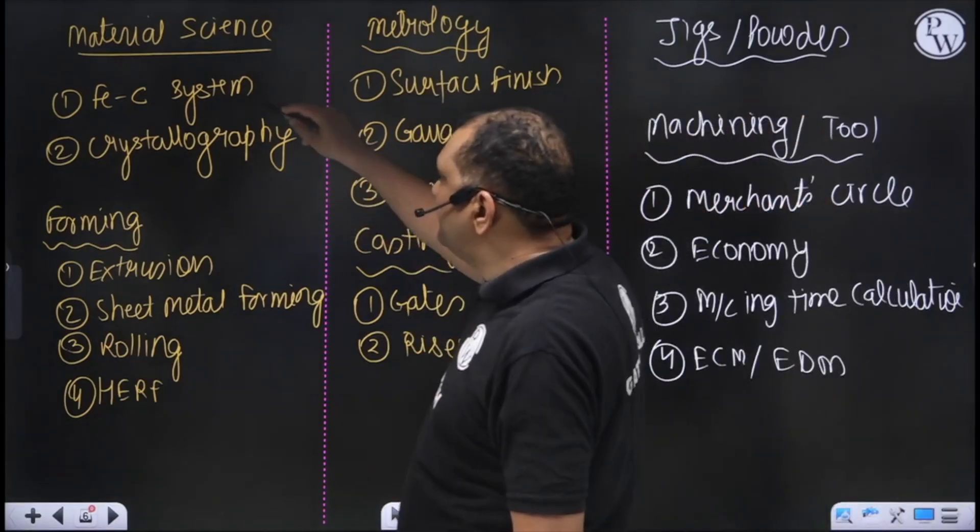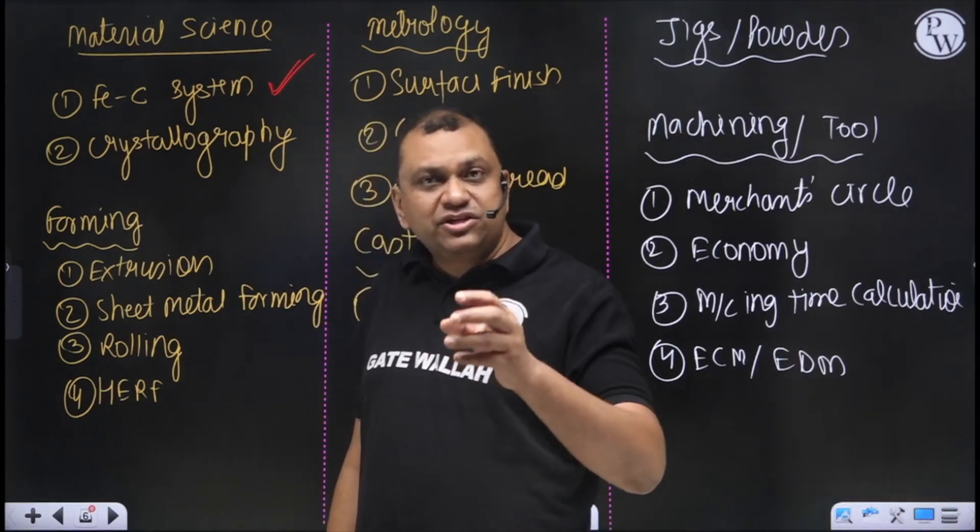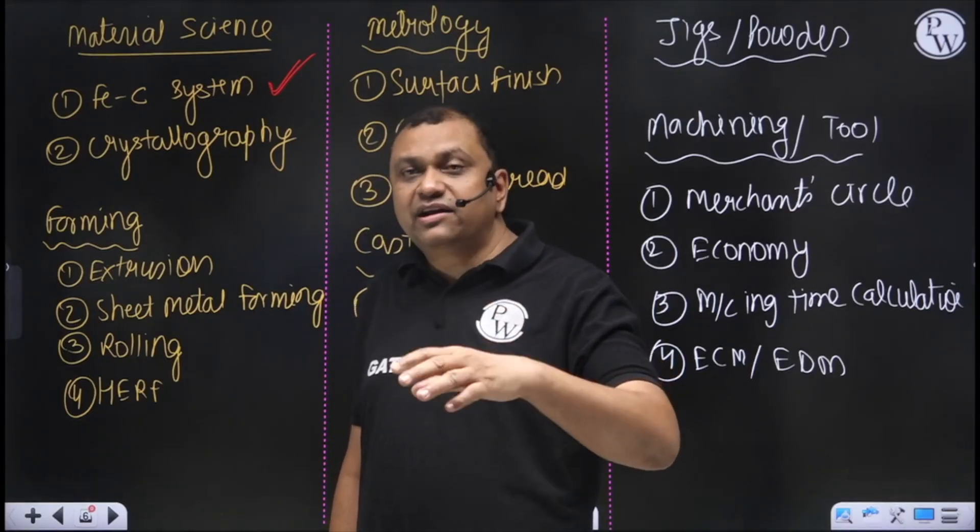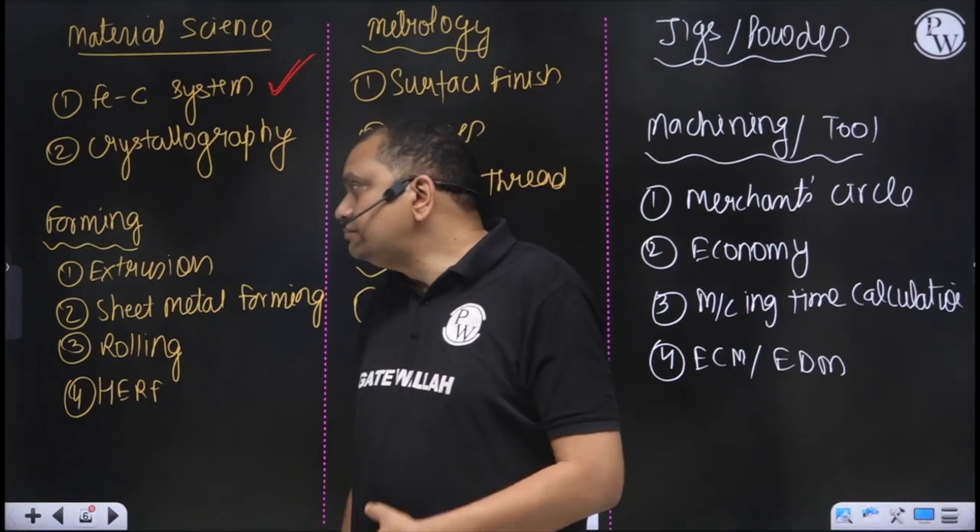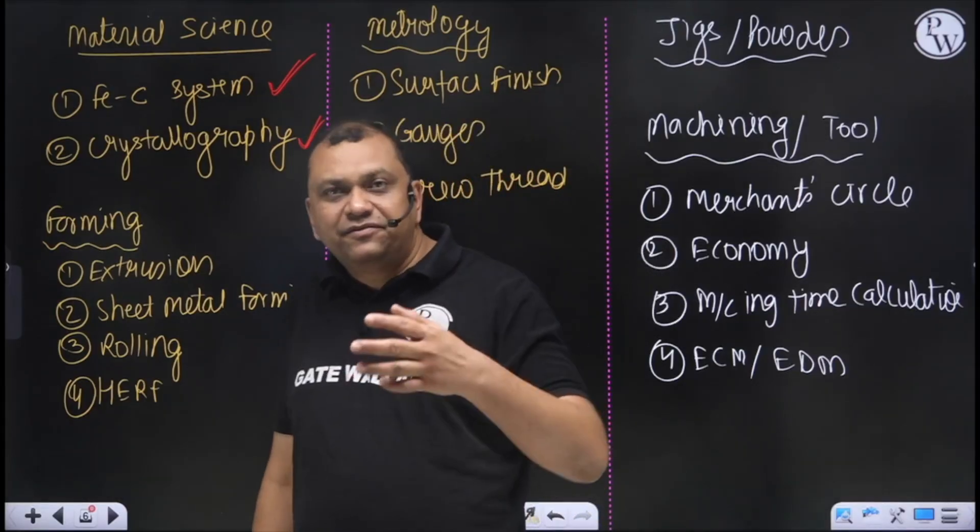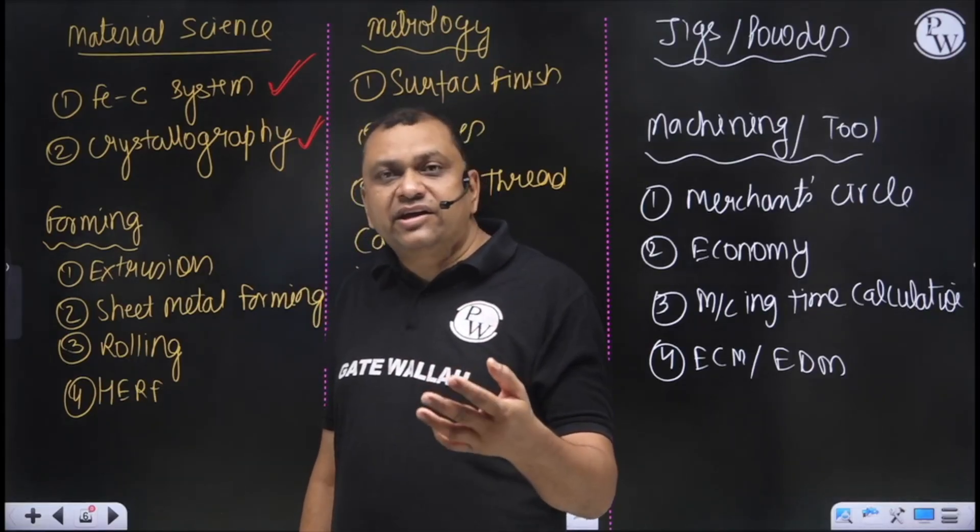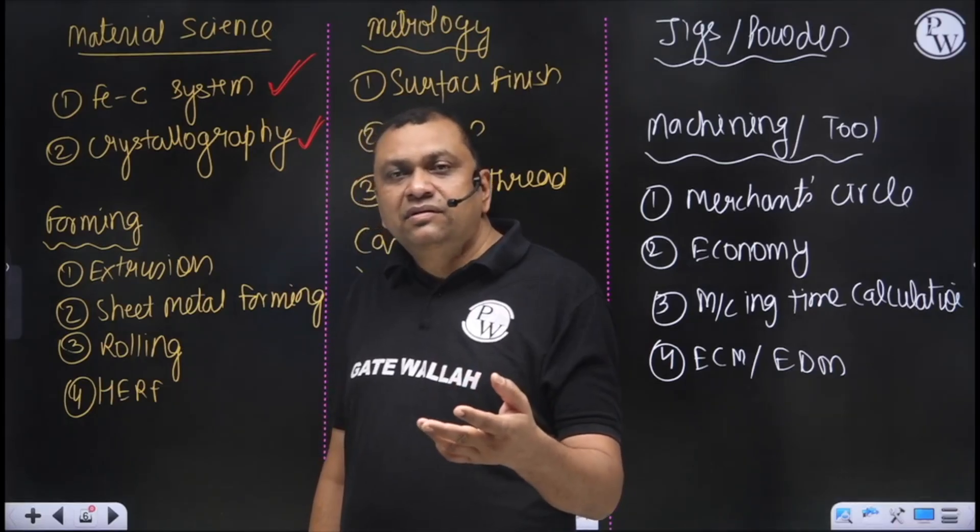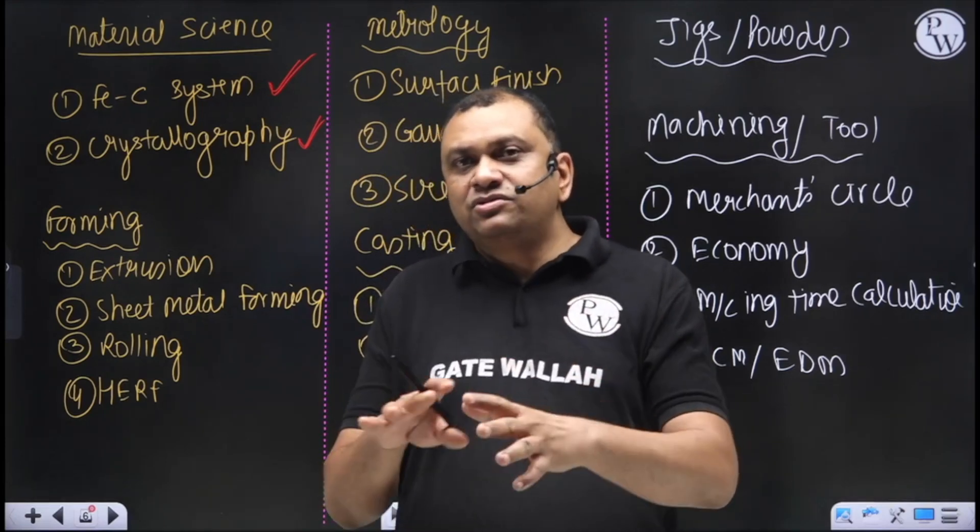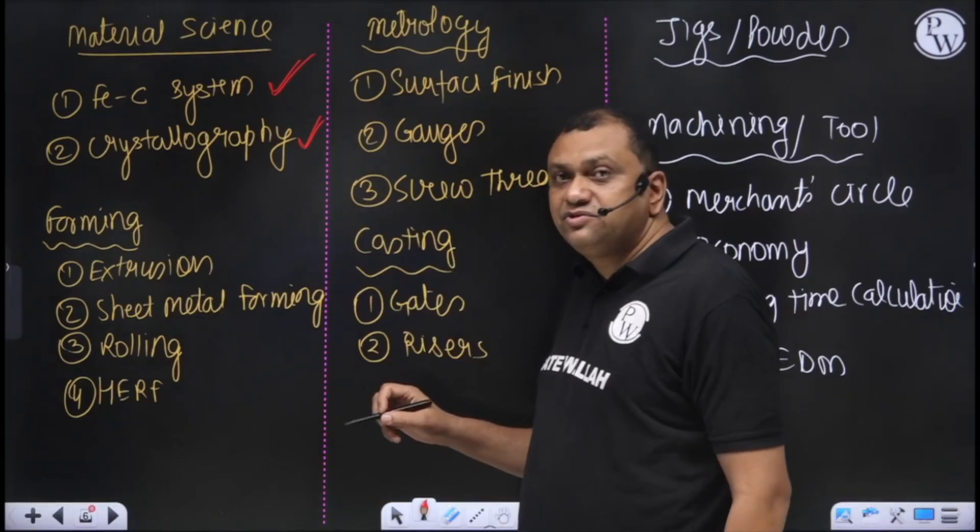For material science this year, you should focus on the iron-carbon system - it's always important. Calculation of mass fraction, effect of alloying elements on iron-carbon system - focus more on that. Then crystallography, like the seven types of unit cells, Bravais lattices, atomic packing factor, crystal direction and crystal plane. Last year in ESE, there was a very beautiful question on crystal direction. So you can expect some question in GATE from crystallography this year.